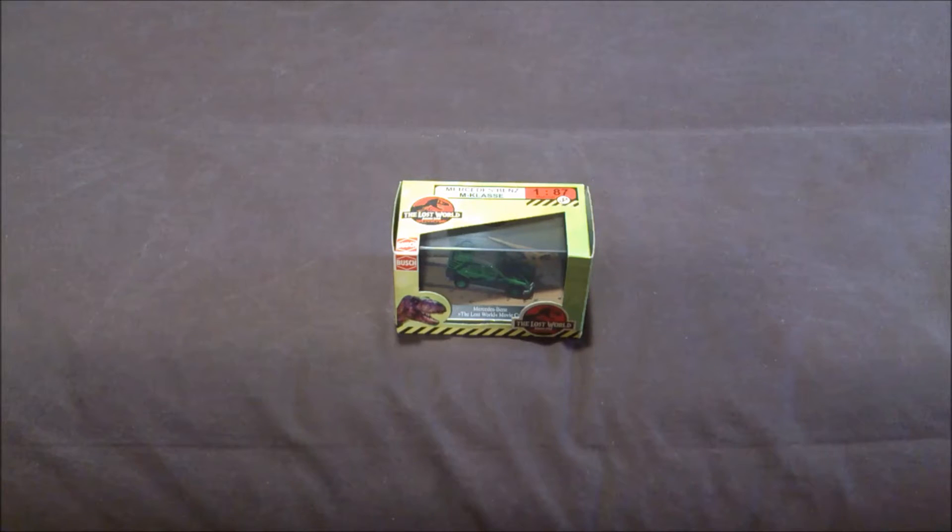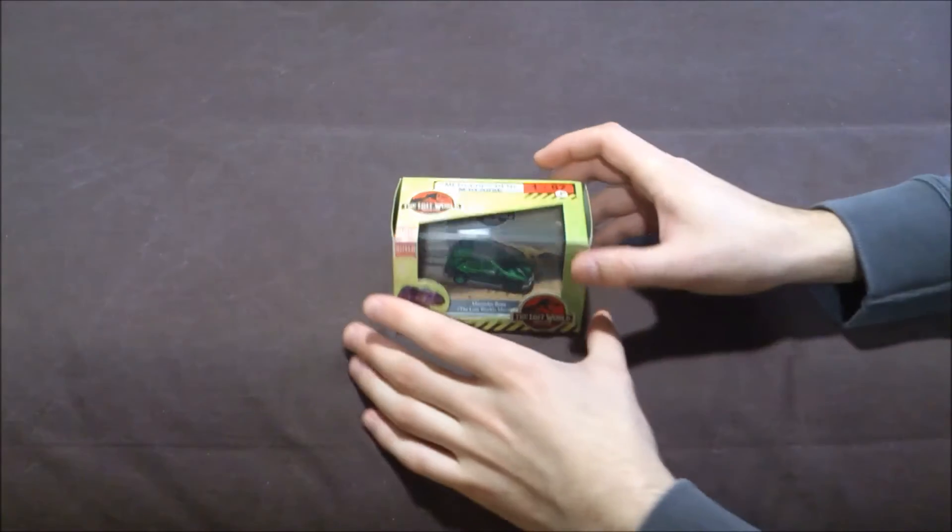So here I have the Busch Mercedes-Benz M-Class 187 from Jurassic Park The Lost World. This is actually the smallest diecast ever made for a Jurassic Park movie, and it's really nice.